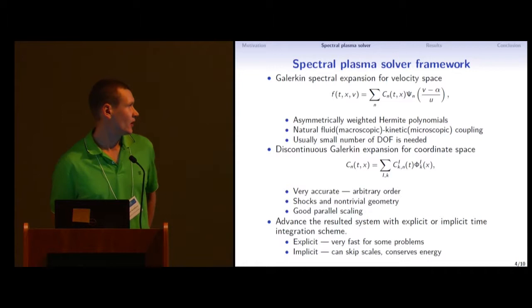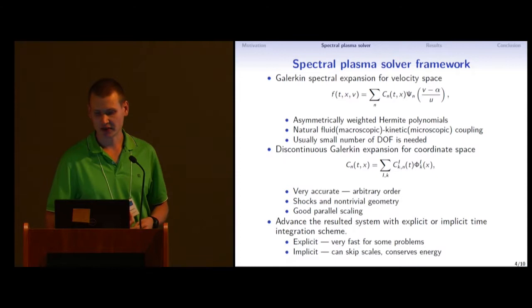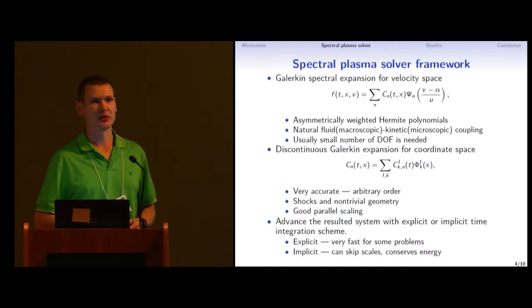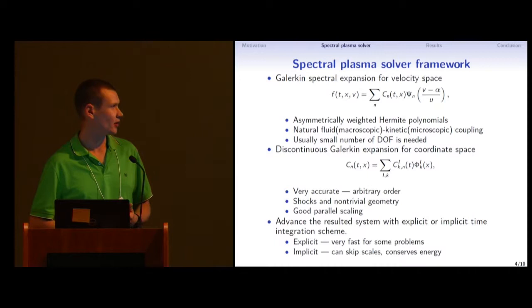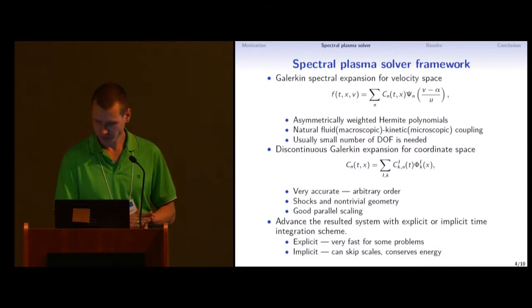In our framework, we also deal with different time discretization, explicit or implicit as needed. So explicit can be very good for some problems and very fast. But usually in plasmas, you need to skip scales, and you need to have implicit methods as well. Moreover, implicit methods are usually more conservative or symplectic.